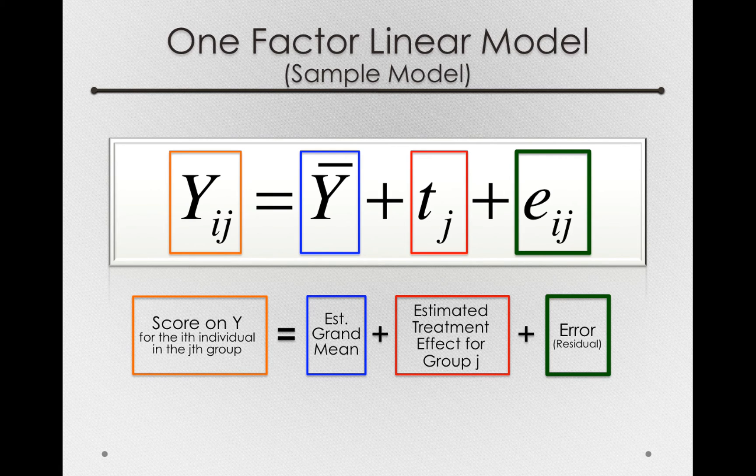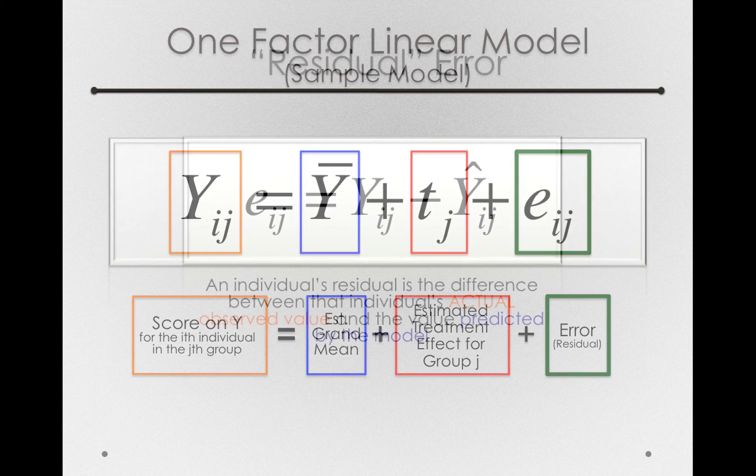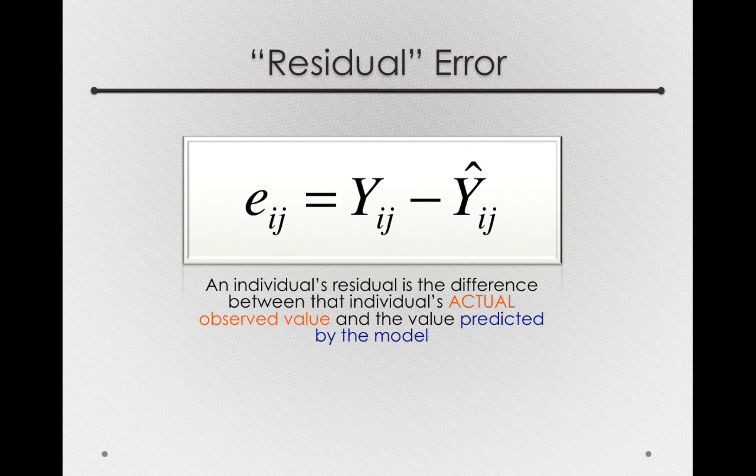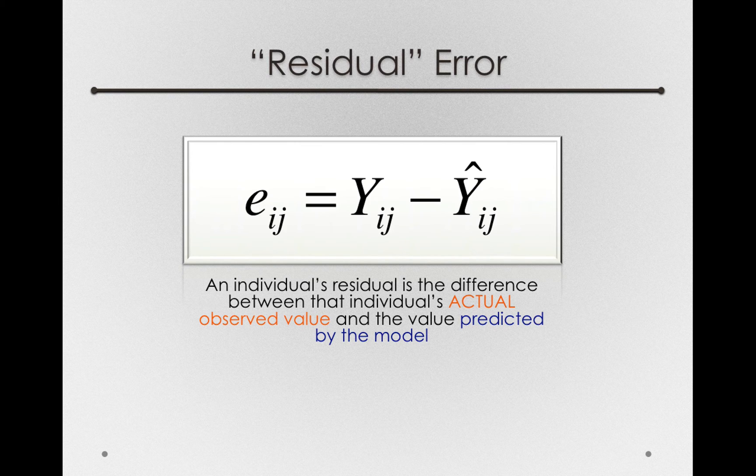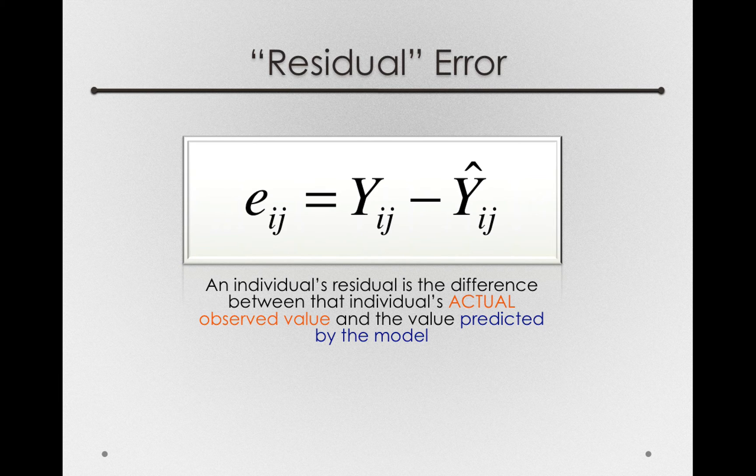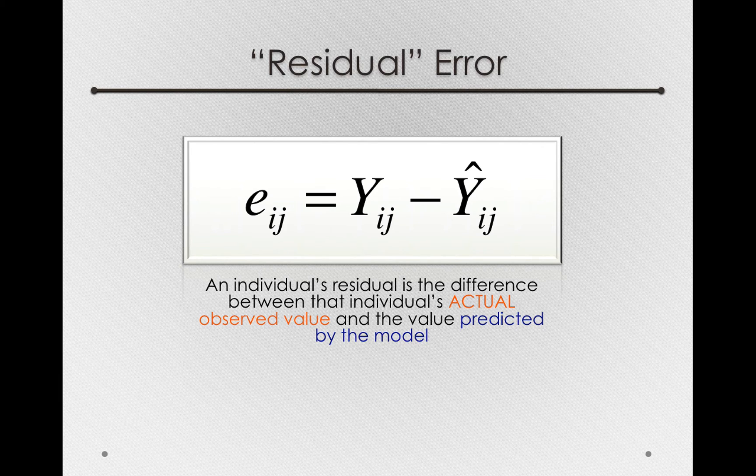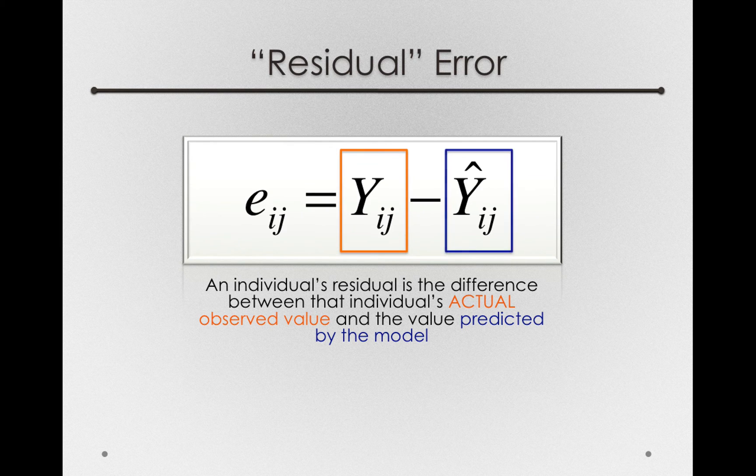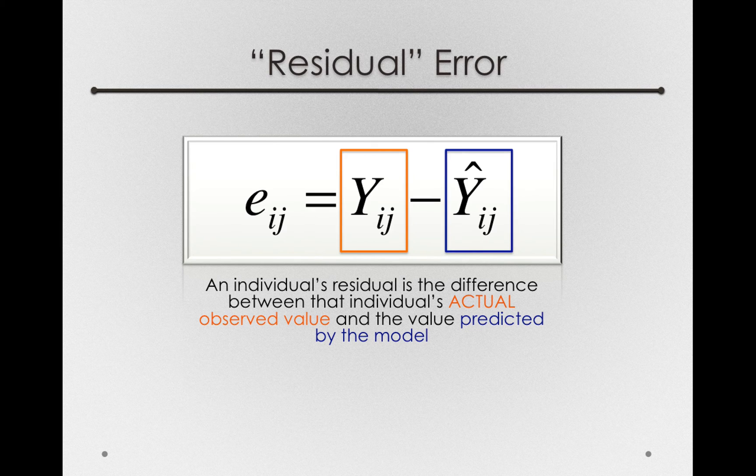Now formally, we can represent or describe the e sub ij's with the following formula. The e sub ij's are equal to the Y ij, that is the individual's actual observed value, and the Y hat ij, which is the value predicted by the model. So these terms, the Y ij and the Y hat ij, is really the residual or the error.